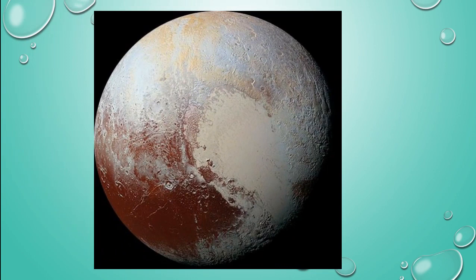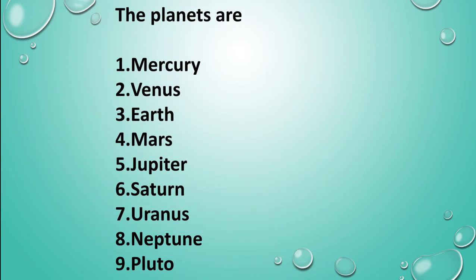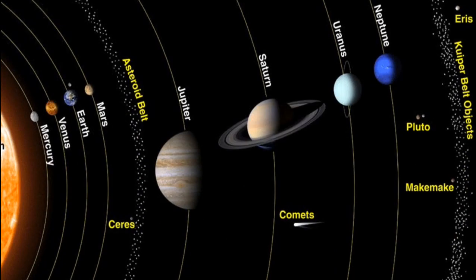This is Pluto planet — before starting this video we should know what Pluto looks like. There are a total of eight planets in the solar system: Mercury, Venus, Earth, Mars, Jupiter, Saturn, Uranus, and Neptune. Before 2006, Pluto was also considered a planet.